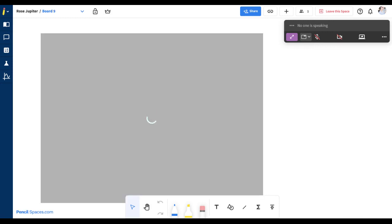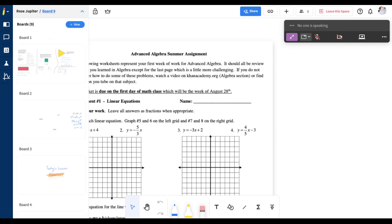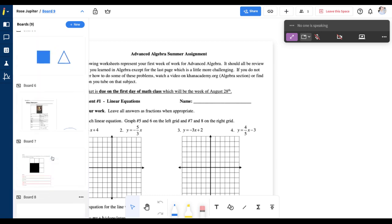If you're uploading a PDF to your whiteboard, it will automatically open in a new board. In Spaces, a board is a separate whiteboard canvas. You can have as many boards as you'd like in a single space.